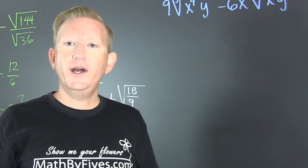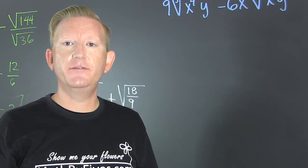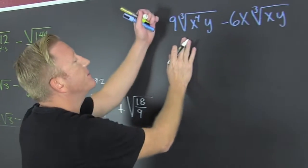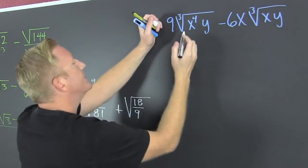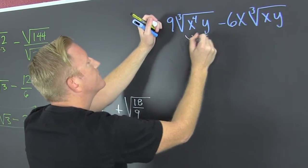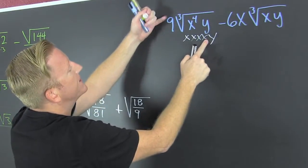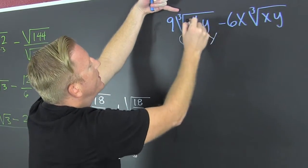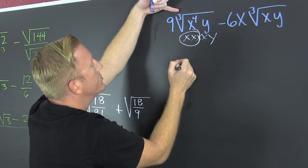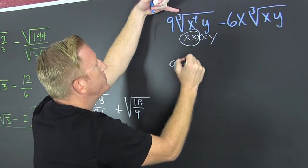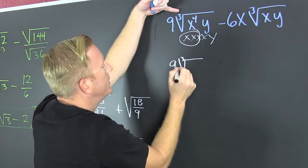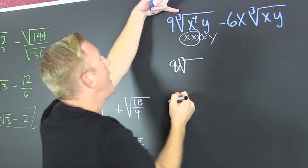All right, what if it has like letters and stuff? If it has variables we're gonna do the same thing. There's four X's, I'm looking for every set of three, so one gets to come out. So I'm looking at 9√(3XY), get that X in there.